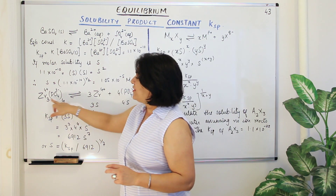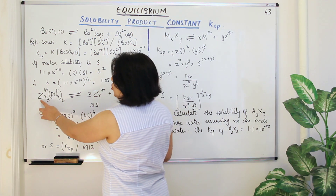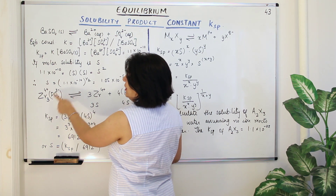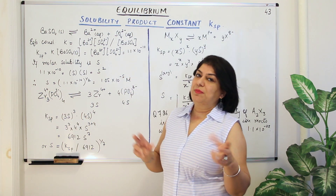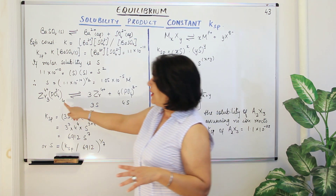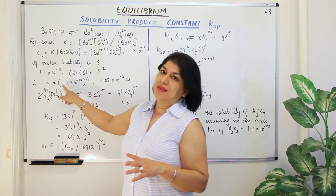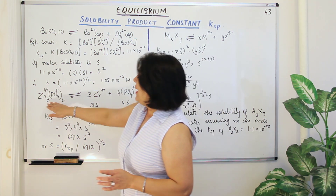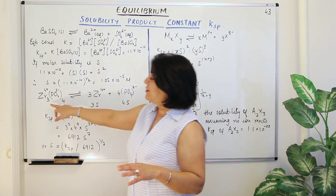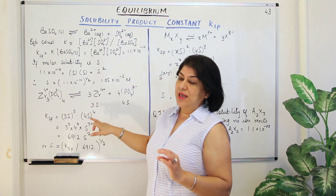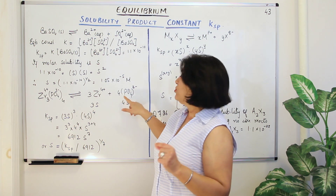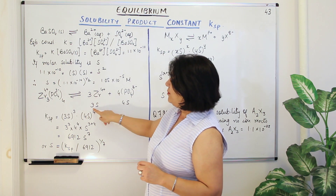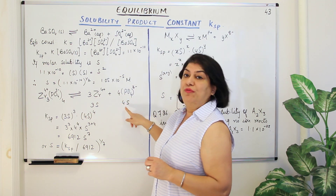Remember, whenever you have such a formula, the charge on the positive ion is usually the subscript number of the anion and the charge on the negative ion is usually the subscript number of the cation — sometimes it is a multiple that has been simplified. Coming back to zirconium phosphate: when it dissociates, you get three moles of zirconium and four moles of phosphate ions. In terms of molar solubility, the moles of zirconium would be 3S and the moles of phosphate would be 4S.